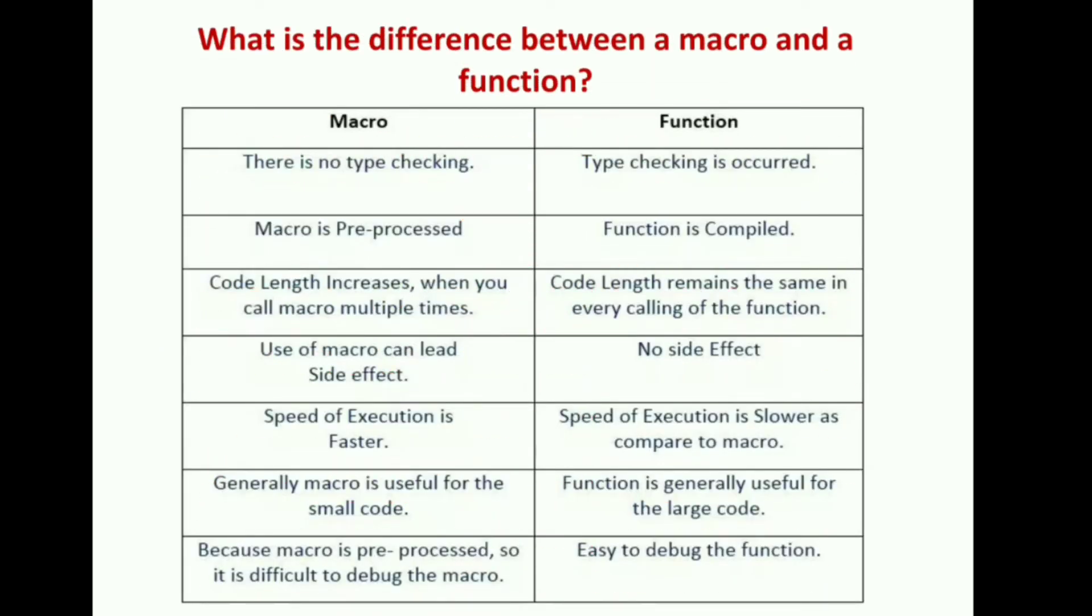What is the difference between macro and function? Macro has no type checking, whereas function has type checking - type checking is occurred. Macro is preprocessed, function is compiled. Before compilation, macro has replaced its value, but the function starts to execute whenever the program has been compiled.